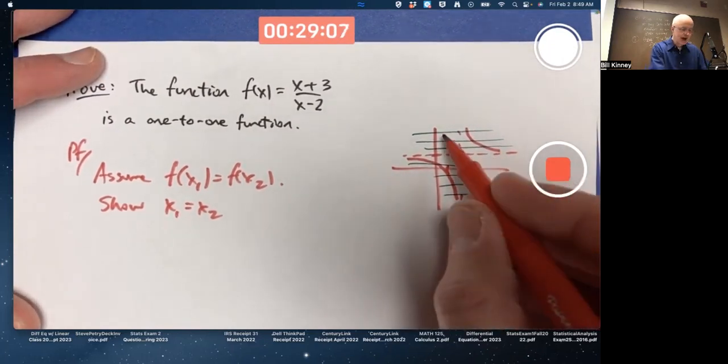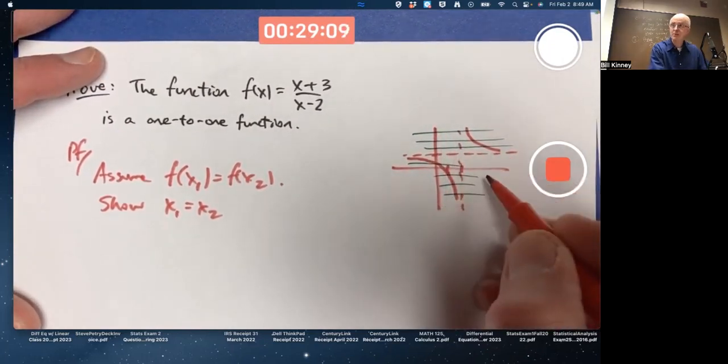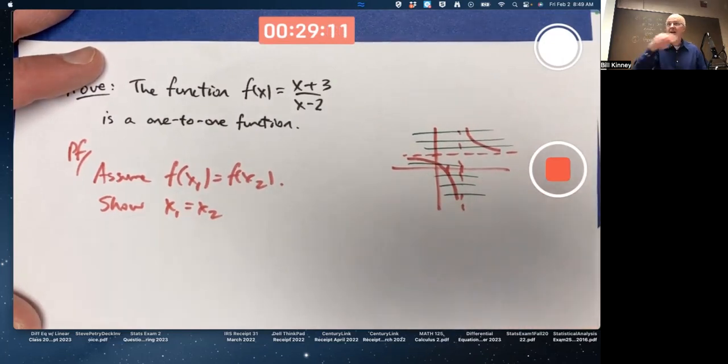That means you give me any output, there's a unique input. x squared, whose graph looks like this, is not one-to-one. Fails the horizontal line test. There are horizontal lines that go through it more than once. For example, at four, there are two inputs, plus or minus two, whose square is positive four.